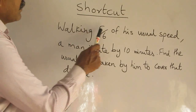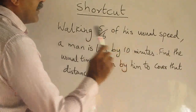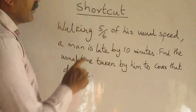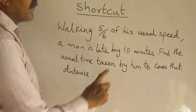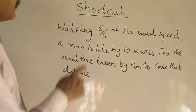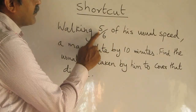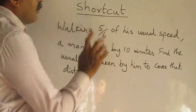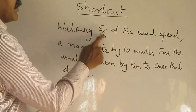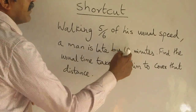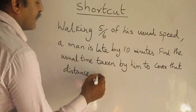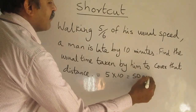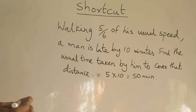Read this question again: walking 5/6 of his usual speed, a man is late by 10 minutes. In this question, I need only two pieces of information. The speed fraction is 5/6 — the numerator is 5, the denominator is 6. Minutes late: 10 minutes. What I am going to do is multiply the numerator by the minutes late. So the answer is 5 times 10 = 50 minutes. Just 5 seconds of work!